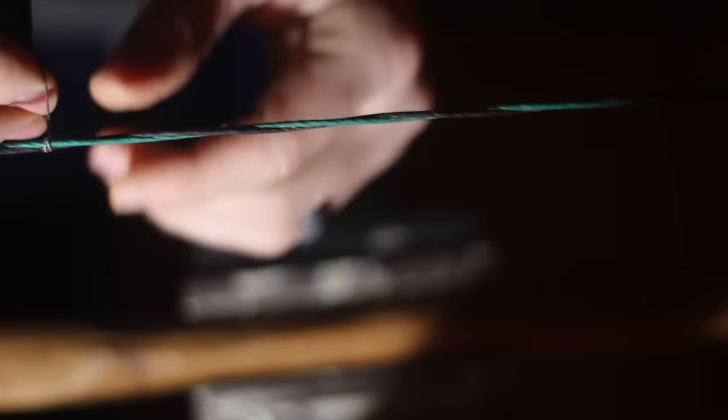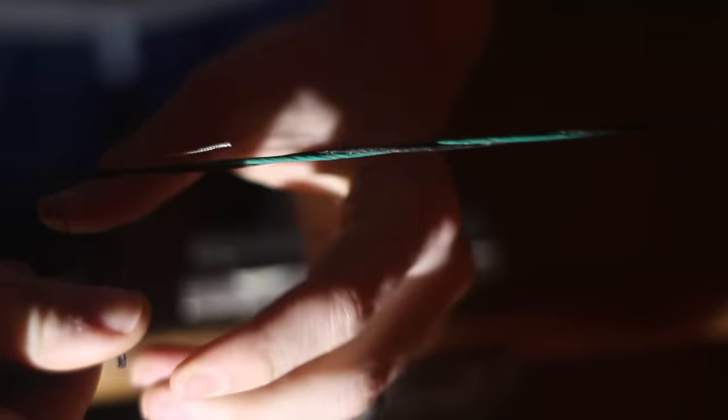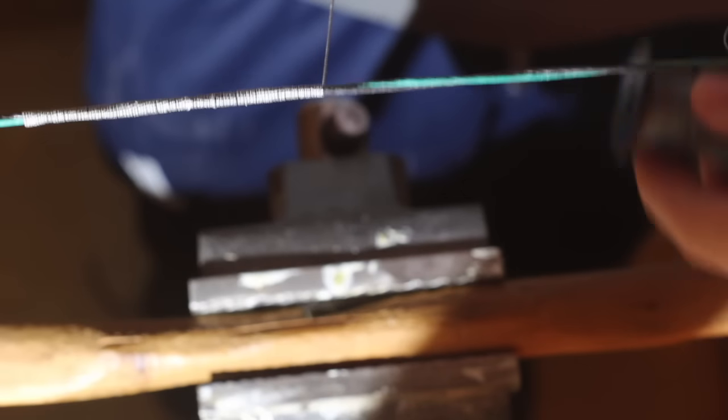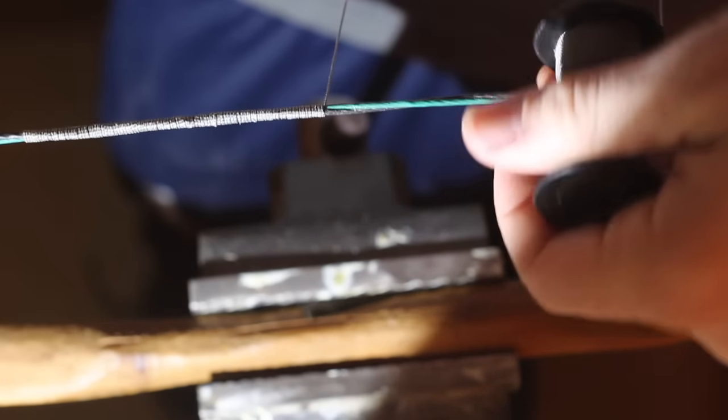Pull out about an inch and a half of serving and point it towards the direction of the arrow rest and then what you're going to do is you're going to wrap over top of that piece of serving all the way up until you get past the arrow rest area and then you're going to make a big loop.